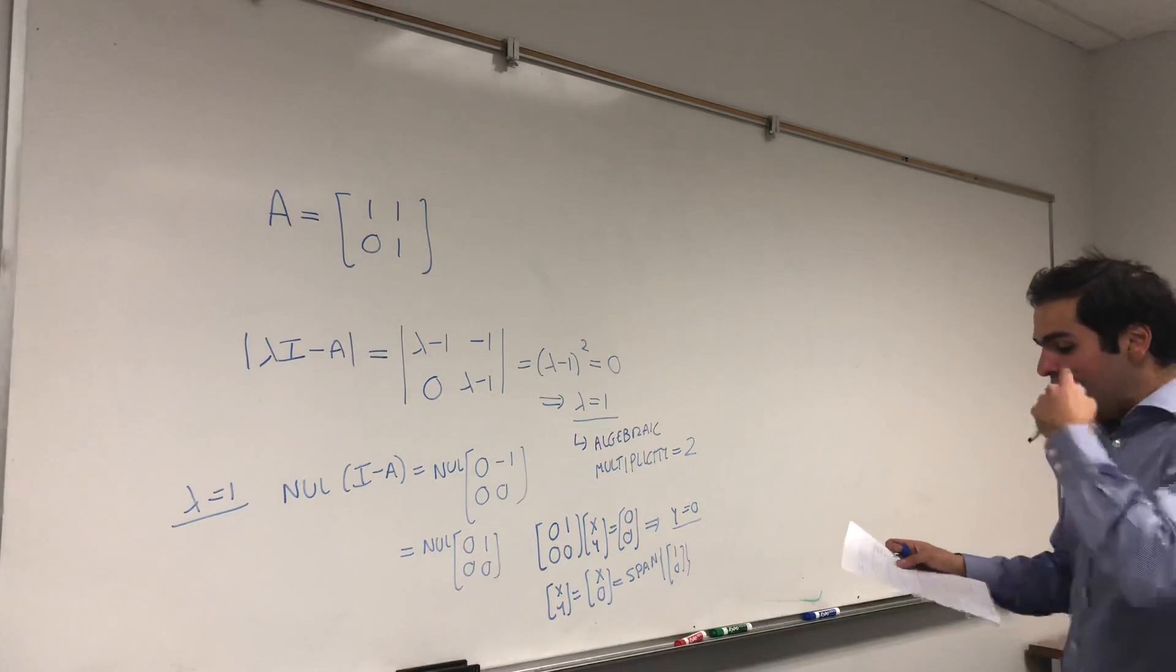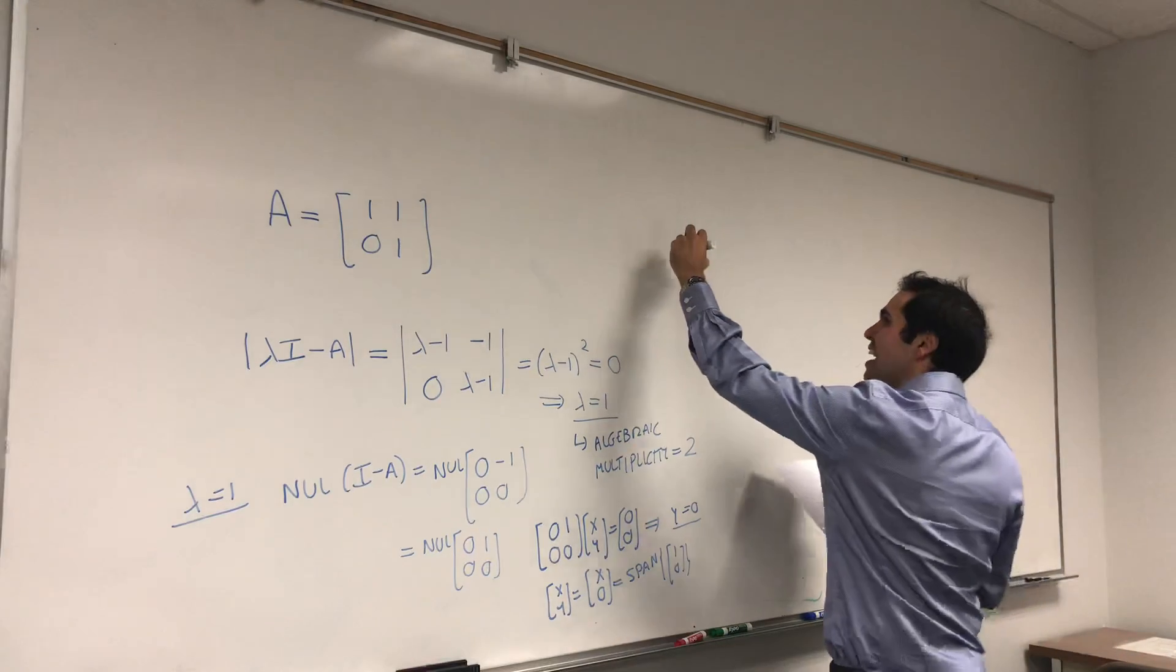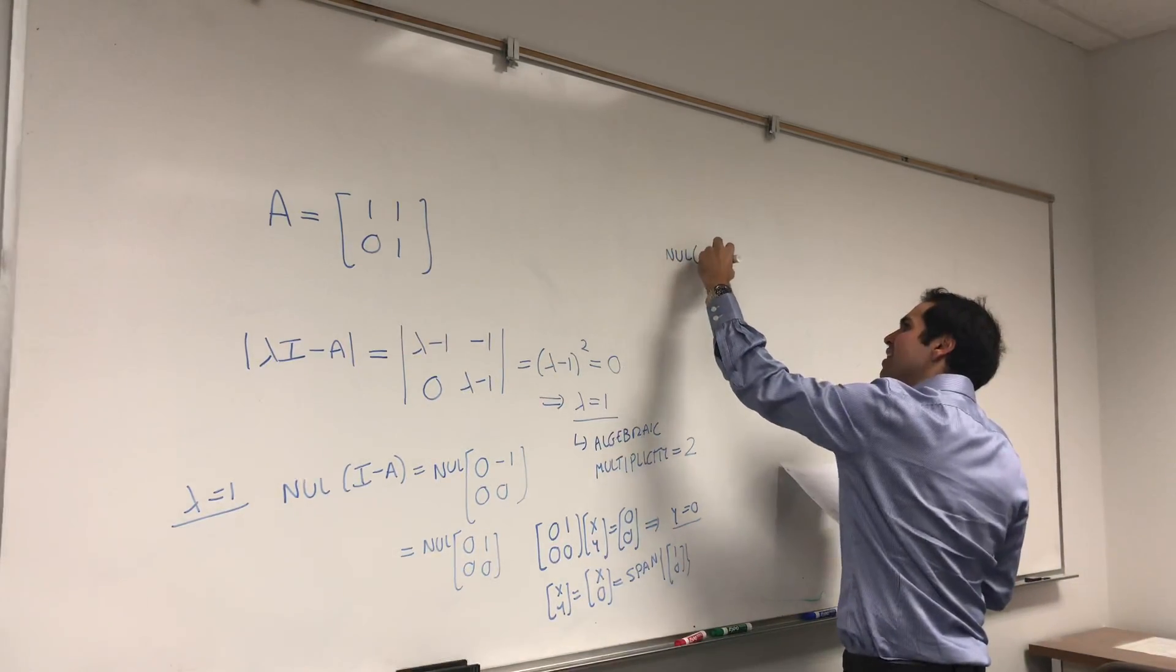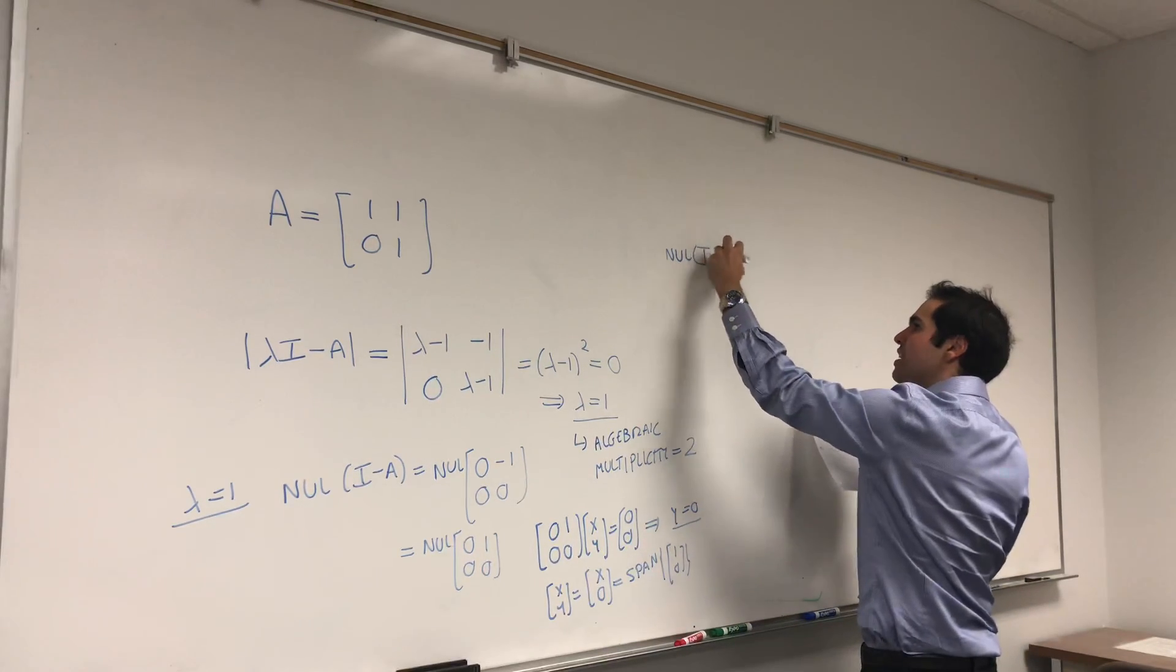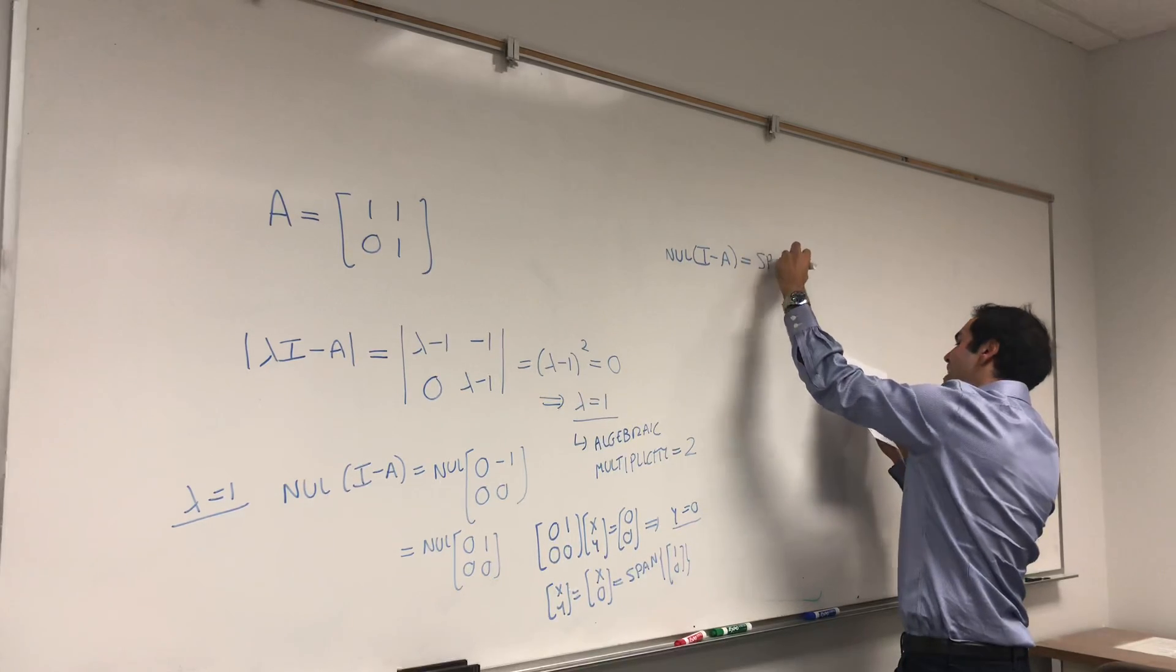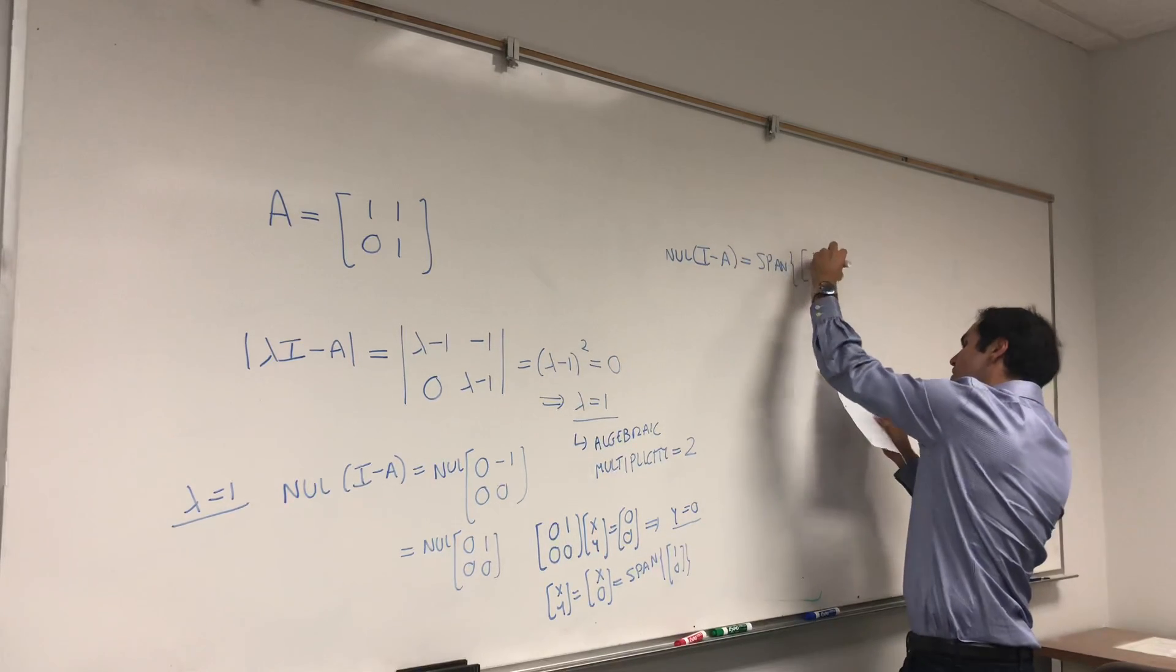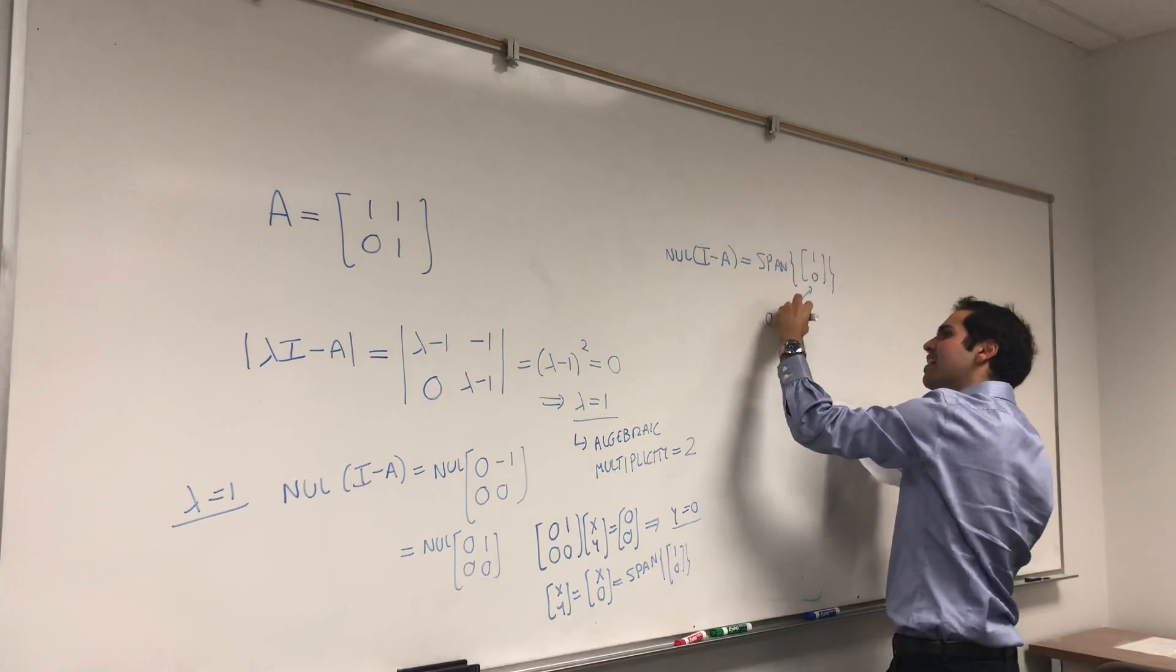You see, in particular, notice this matrix only has one eigenvector. In other words, it has the basis for the eigenspace is just one dimensional.